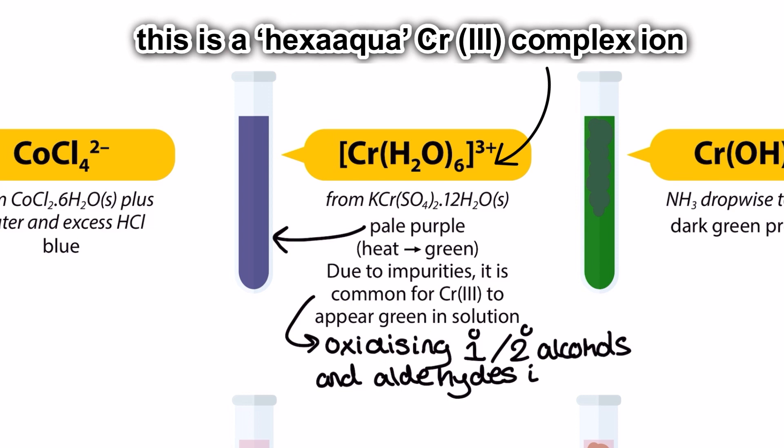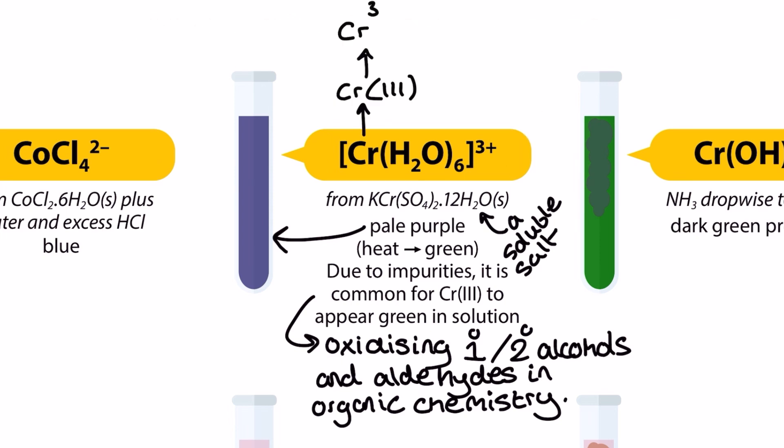It's a pale purple octahedral complex ion which can actually appear green. This green color is more widely seen in organic chemistry when we oxidize primary and secondary alcohols or aldehydes using acidified potassium dichromate 6. That color change is famously orange to green and the green color is because of this complex ion.